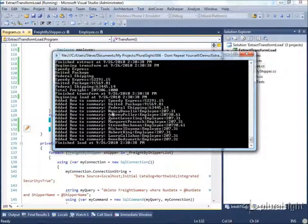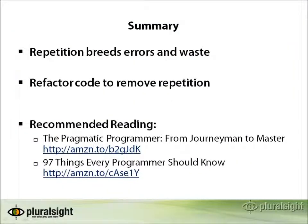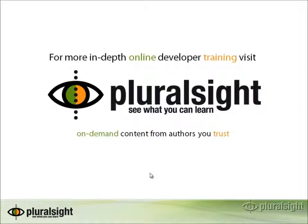This wraps up part one of the Don't Repeat Yourself Principle — one of the fundamentals of software engineering and a principle of object-oriented design. To summarize: repetition breeds errors and waste. You want to try and refactor your code to remove repetition using a number of known refactorings, design patterns, and principles. I mentioned two books that I recommend: the first is The Pragmatic Programmer: From Journeyman to Master, and the other is 97 Things Every Programmer Should Know. Thank you very much — this has been the Don't Repeat Yourself Principle part one by Steve Smith for Pluralsight On-Demand. Stick around and view part two, where we'll show some additional refactorings as well as how to apply the DRY principle to processes in addition to just code.